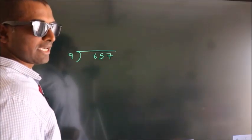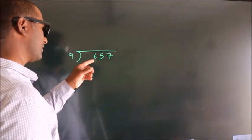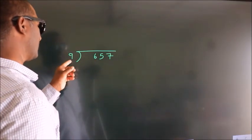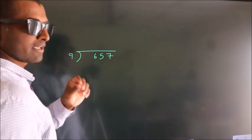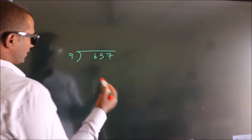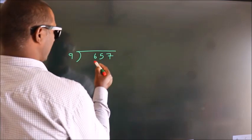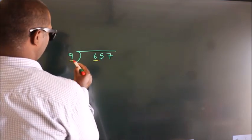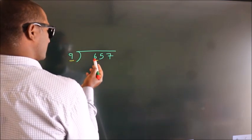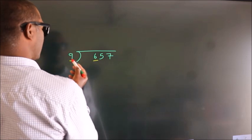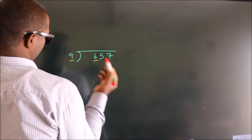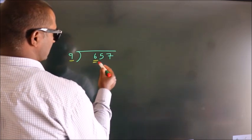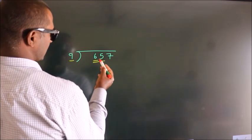How to divide 657 by 9? Here we have 6, and here 9. Since 6 is smaller than 9, we should take two numbers: 65.